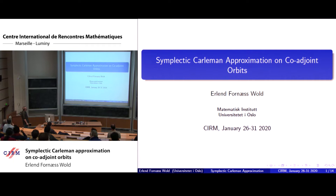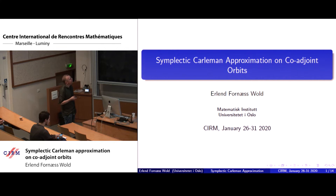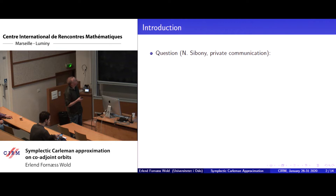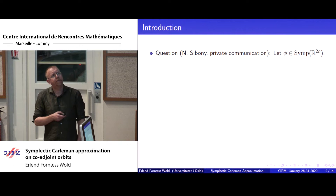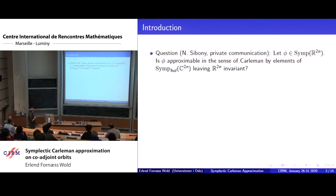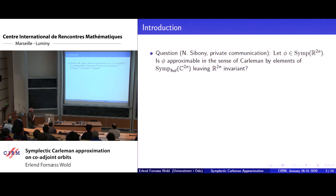Thanks to the organizers for inviting me. I'm going to talk about symplectic Carleman approximation on coadjoint orbits. The starting point is a question asked by Nassim: if you take a smooth, C-infinity smooth symplectomorphism on R^{2n}, and R^{2n} sits inside C^{2n}, then the question is whether this is approximable in the sense of Carleman by elements of this holomorphic symplectic group, leaving R^{2n} invariant.